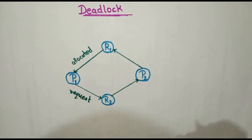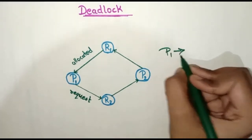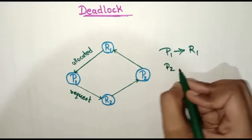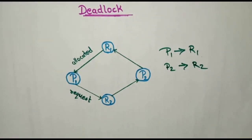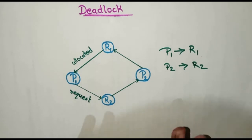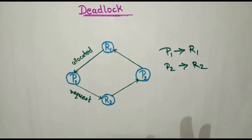So P1 is held by R1 and P2 is held by R2. Until P2 releases R2, P1 cannot access R2. Similarly, until P1 releases R1, P2 cannot access R1. This state is called a deadlock.